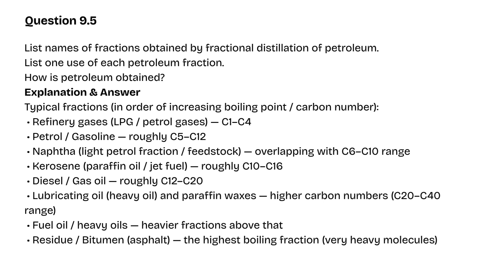Refinery gases / LPG / petrol gases: C1–C4. Petrol / gasoline: roughly C5–C12. Naptha — light petrol fraction / feedstock: overlapping C6–C10 range. Kerosene — paraffin oil / jet fuel: roughly C10–C16. Diesel / gas oil: roughly C12–C20. Lubricating oil, heavy oil, and paraffin waxes: higher carbon numbers.